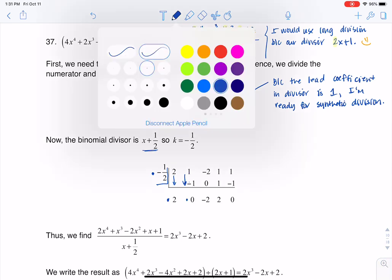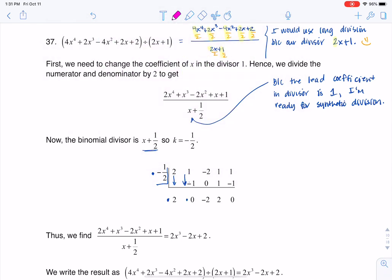All right, now let me change colors just so we can see the variability here. So 0 times negative 1 half, sure enough, it's 0. I'm going to add, so negative 2 plus 0 is negative 2.